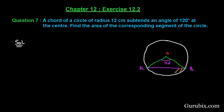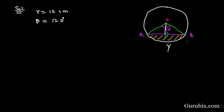For that, let us draw a perpendicular OP to the chord AB. Now let us collect the information given in the question: the radius of the circle equals 12 centimeters, and the angle of sector AOB equals 120 degrees.